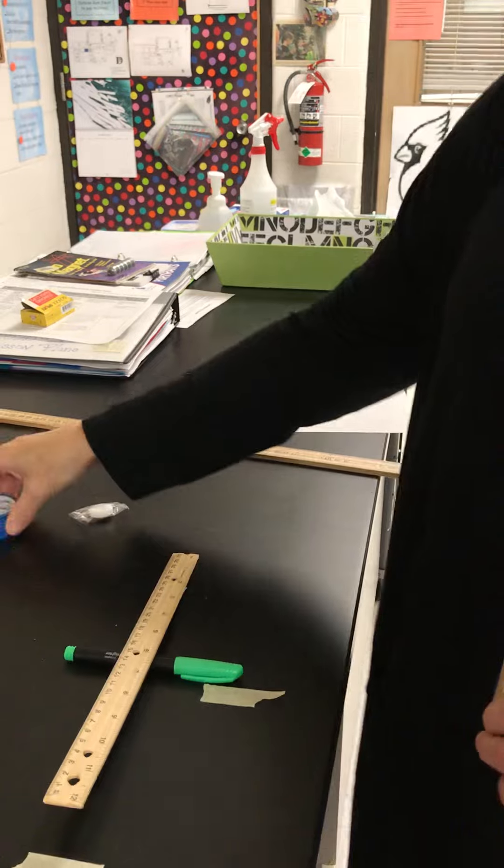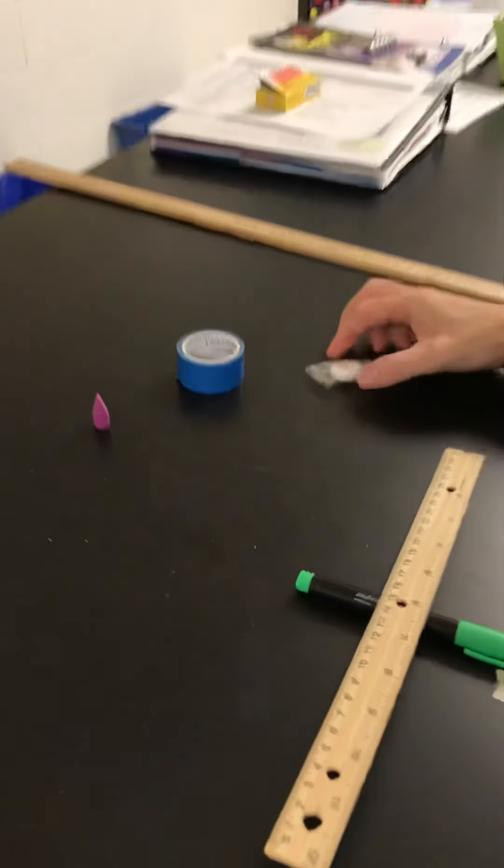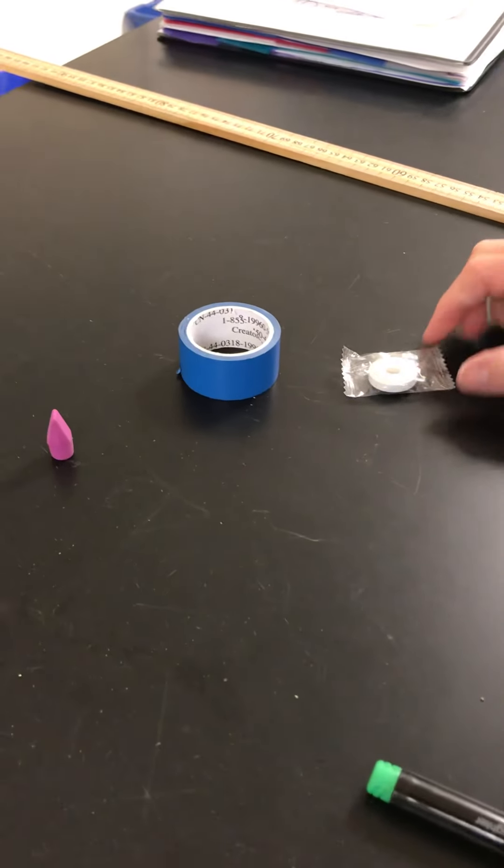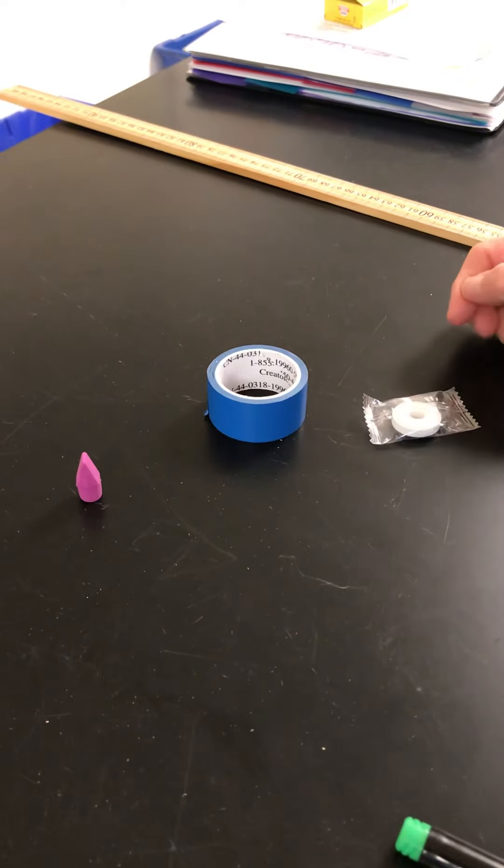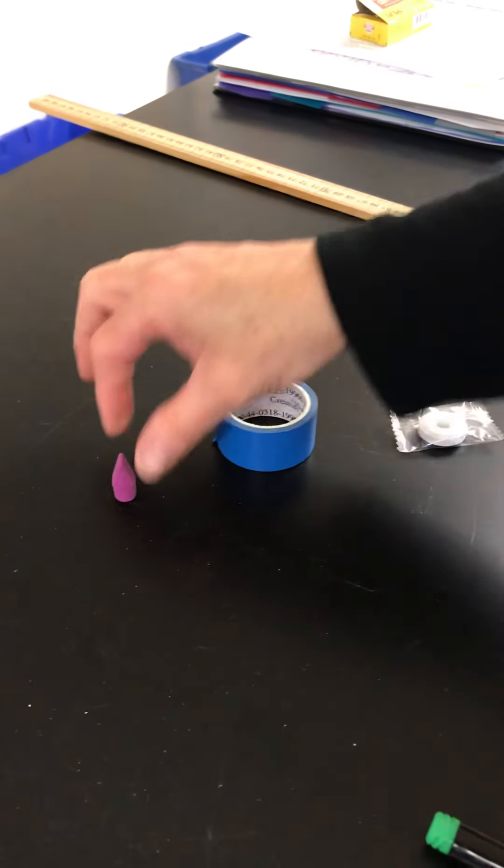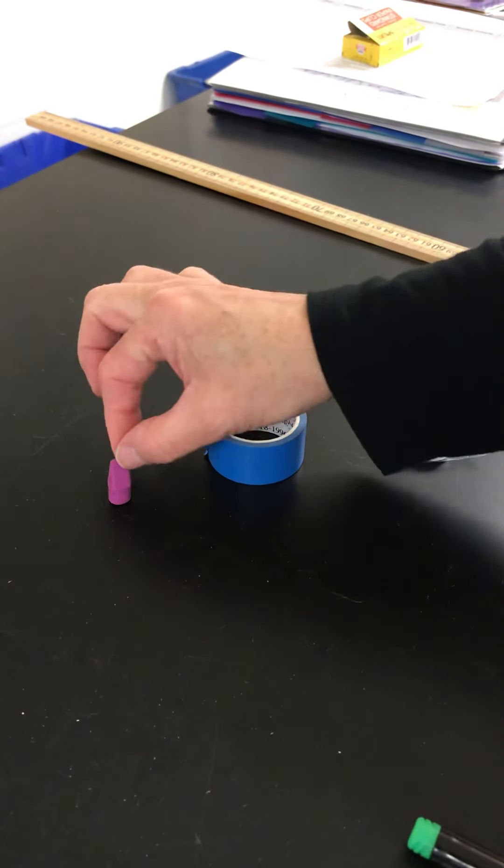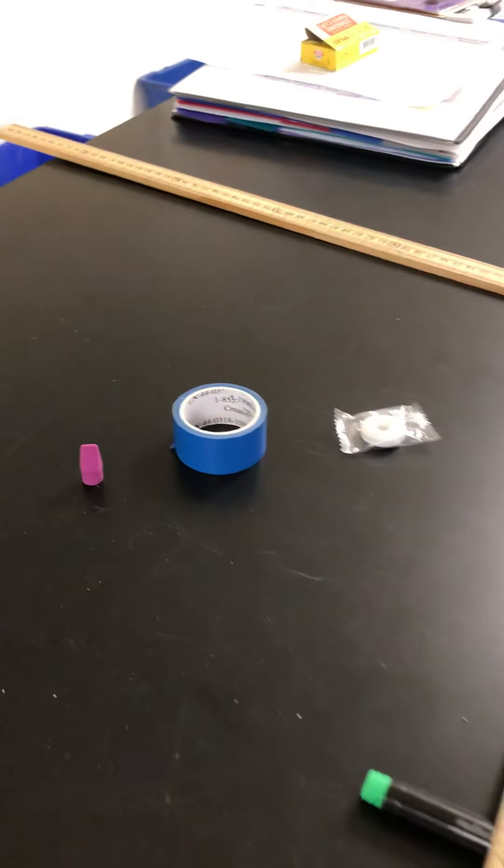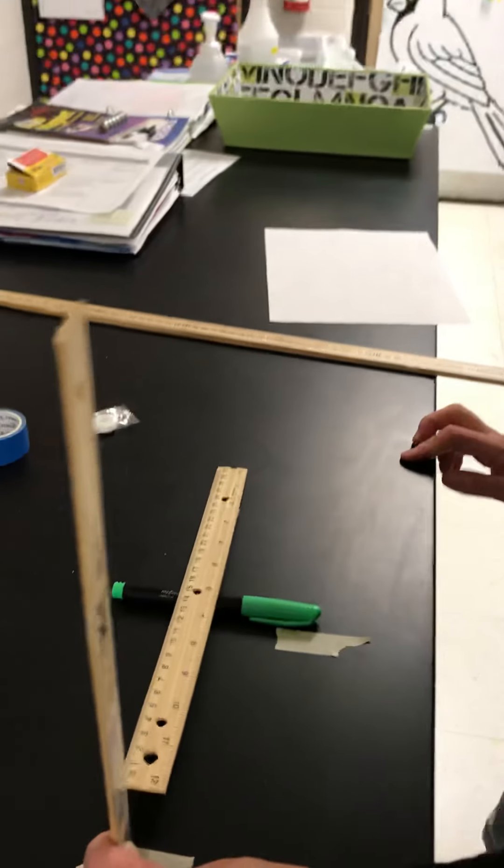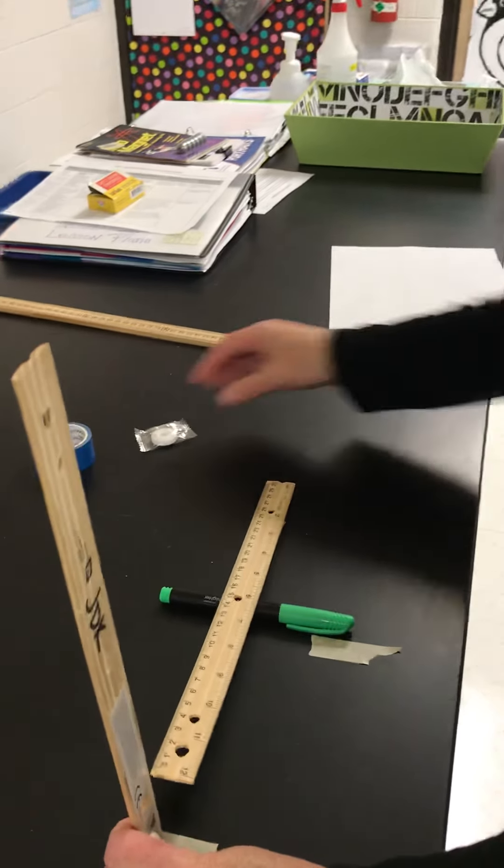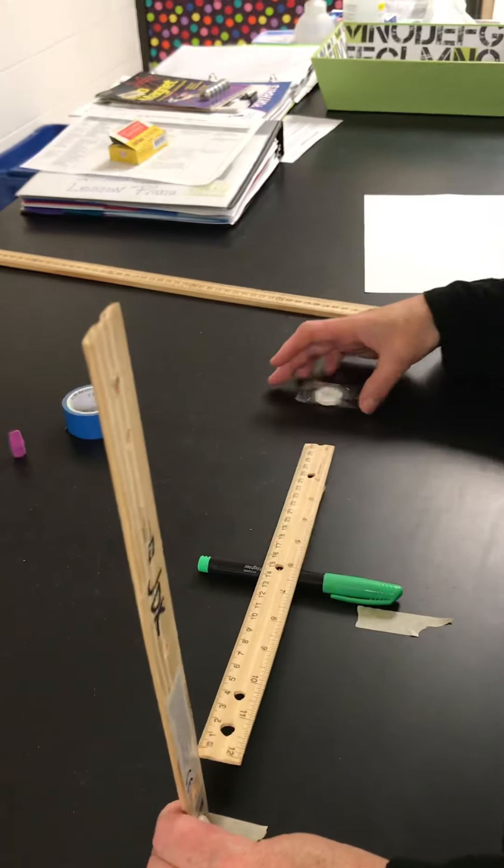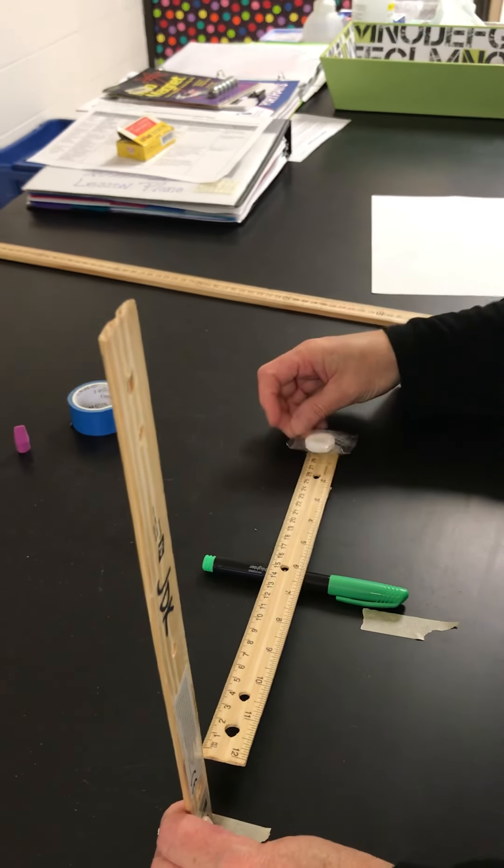Here are our three objects. We'll start with a wintergreen lifesaver, one of my favorites. Then we have a roll of tape, and finally we'll launch rocket man, the little eraser. Let's get set up with our first object, the wintergreen lifesaver.